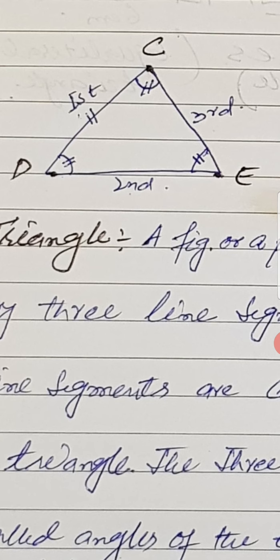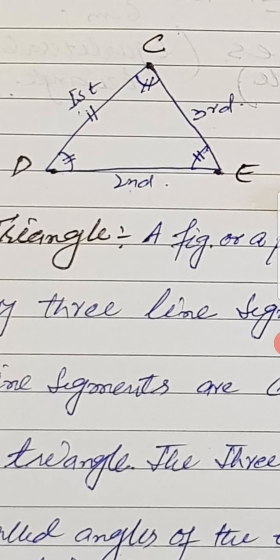Can you tell me the full name of angle D? The full name of angle D is angle CDE. You can also give the full name of angle E — the full name of angle E is angle DEC. Similarly, the full name of angle C is angle ECD. These are the three angles of the triangle.